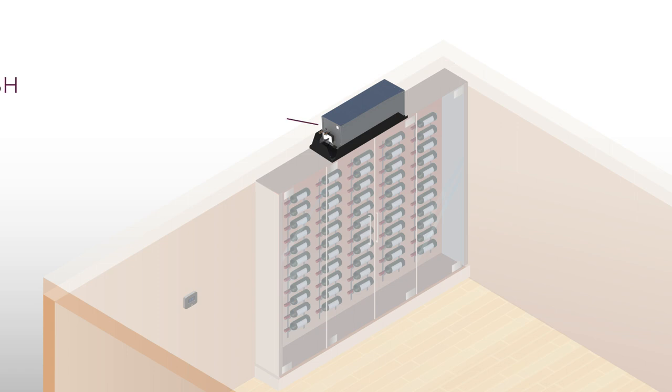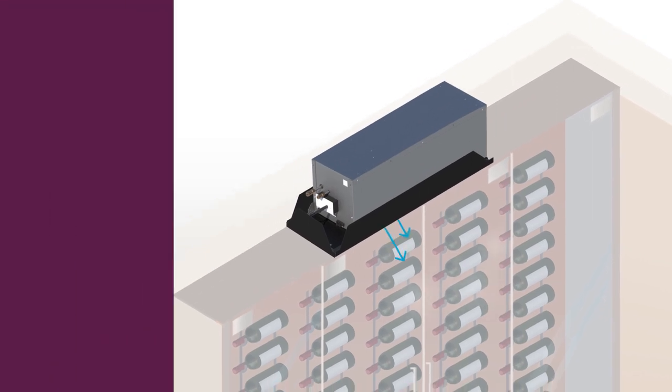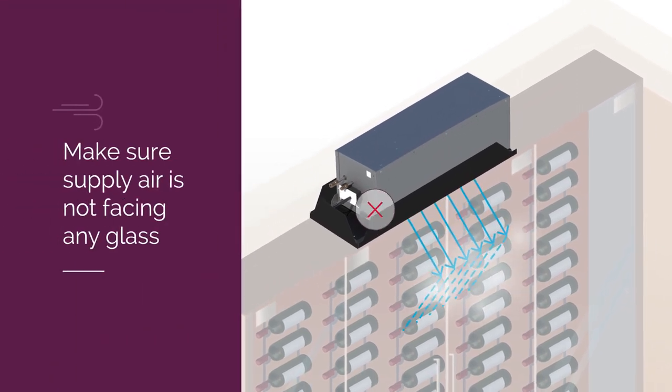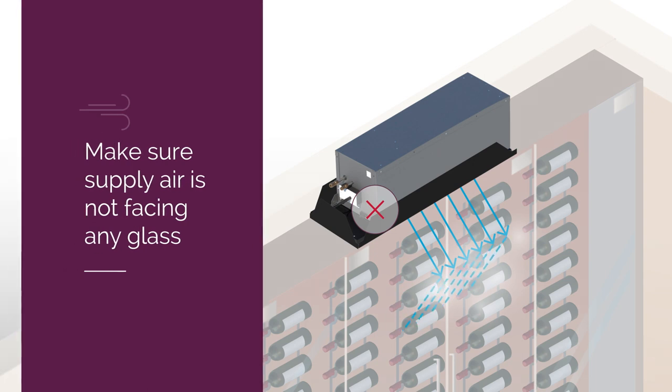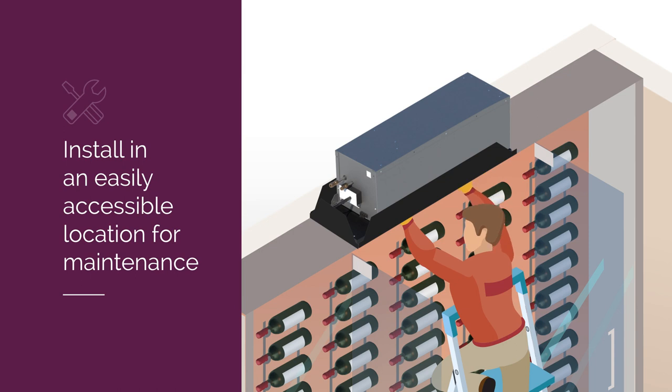WineGuardian wine wall cooling systems mount completely flush with the ceiling in a wine wall. For these and other ceiling-mounted units, it's important to make sure your supply air is not facing any glass to prevent condensation. You'll also want to make sure the system is installed in a location that can be accessed easily for maintenance.